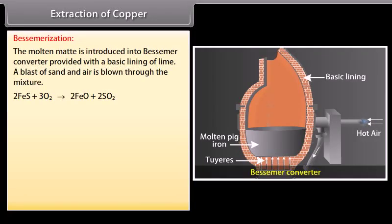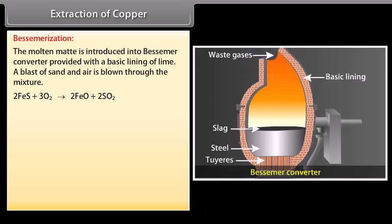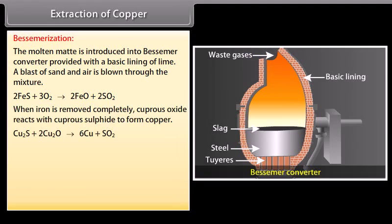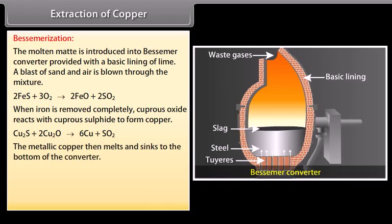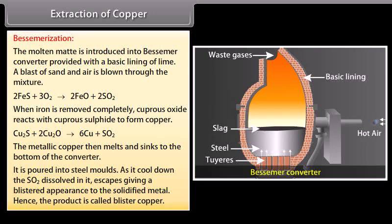Bessemerization: The molten matte is now introduced into Bessemer converter provided with a basic lining of lime. The blast of sand and air is blown through the mixture. FeO is removed as FeSiO3. When iron is removed completely, cuprous oxide reacts with cuprous sulphide to form copper. The metallic copper then melts and sinks to the bottom of the converter. It is poured into steel molds. As it cools down, the SO2 dissolved in it escapes giving a blistered appearance to the solidified metal. Hence, the product is called blister copper. It contains about 98% copper. Blister copper is refined electrolytically.